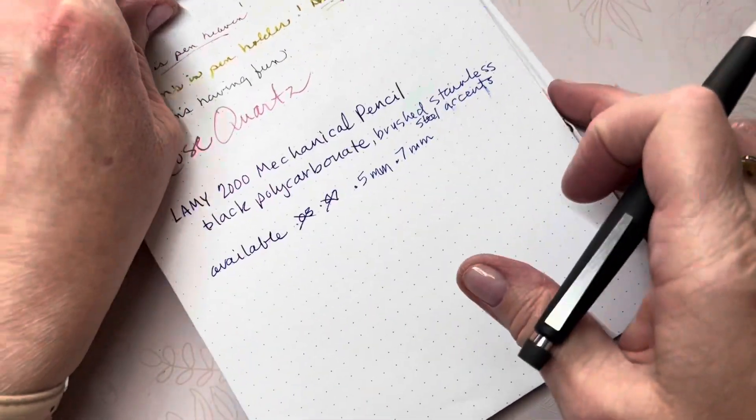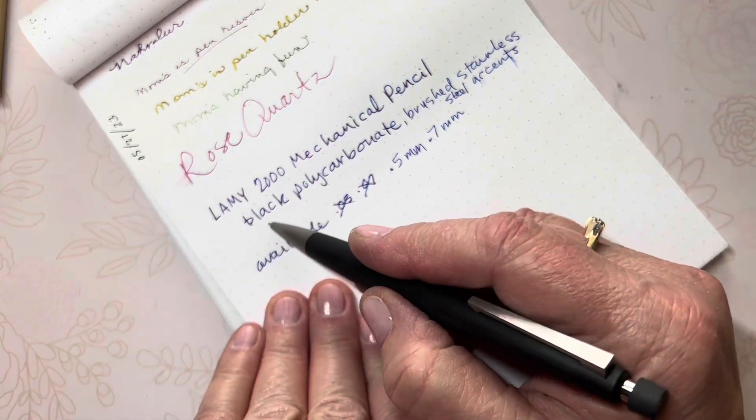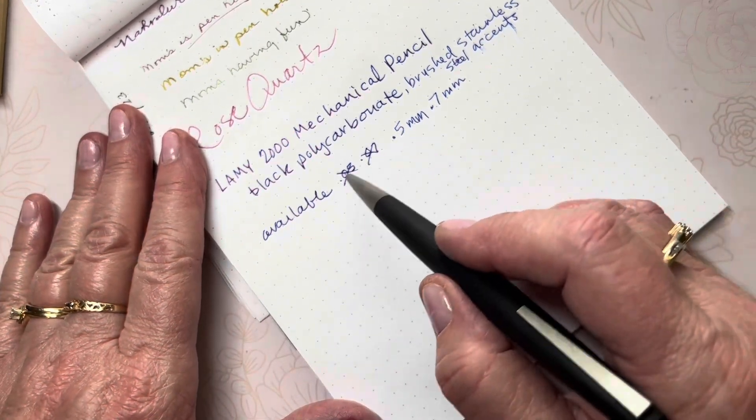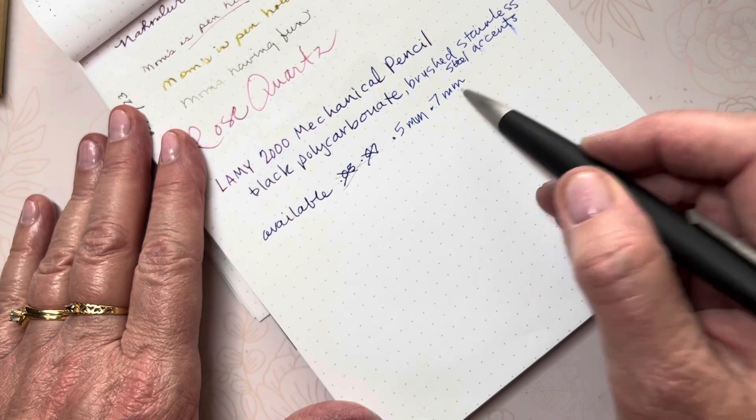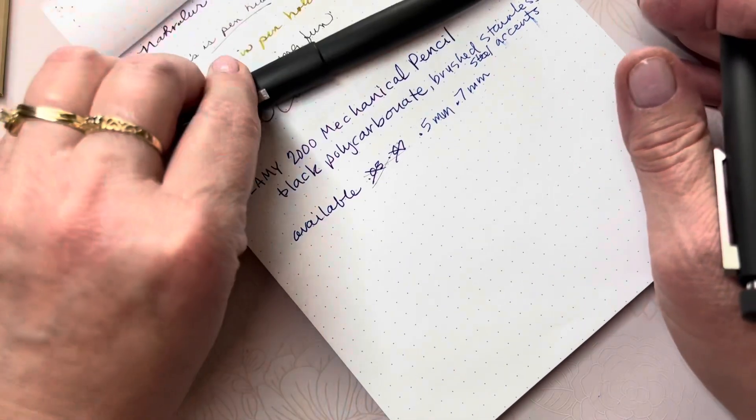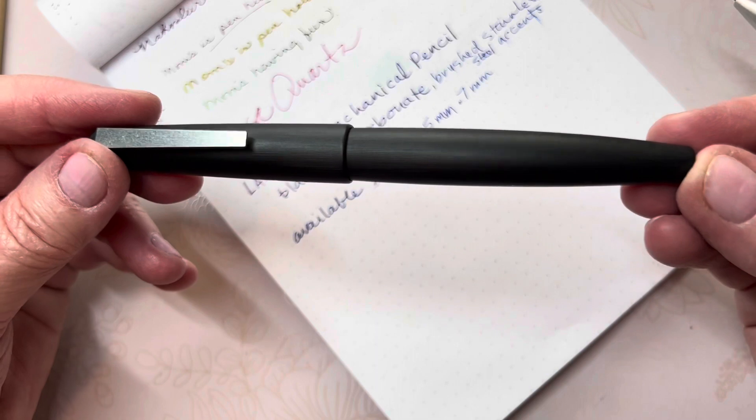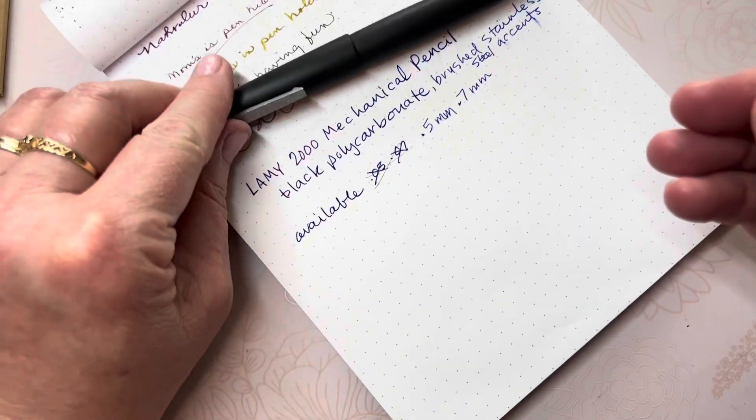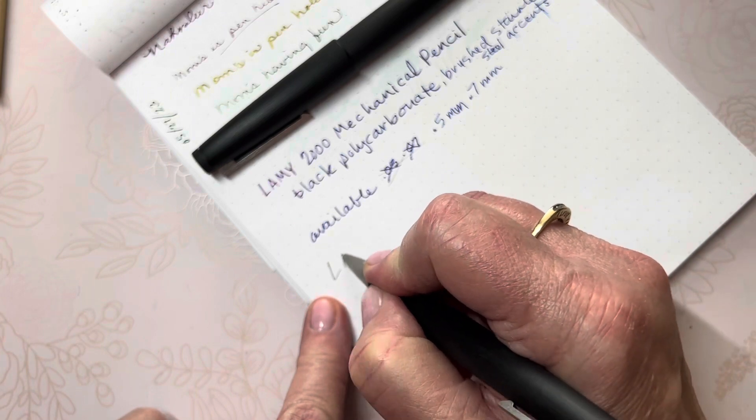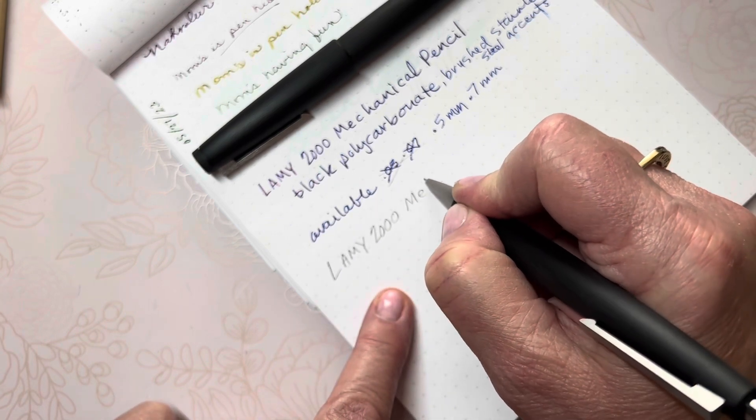So let's put this back together, extend some lead, there we go. I did write on my paper Lamy 2000 mechanical pencil - it's a black polycarbonate with brushed stainless steel accents, available in, my mistake, 0.5 millimeter and 0.7 millimeter leads. I wanted to make a note of that. And I wrote that with this pen, which is inked with the Esterbrook 75 Diamond Jubilee ink, and I love it in there. So this is our Lamy 2000 mechanical pencil.